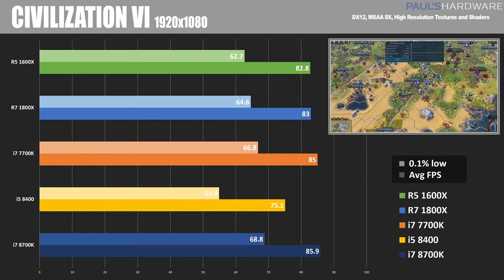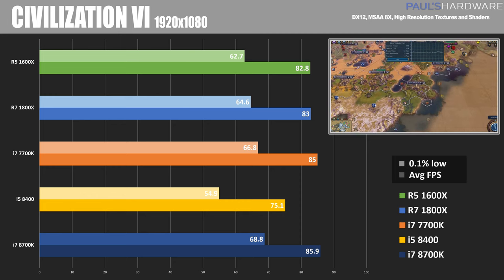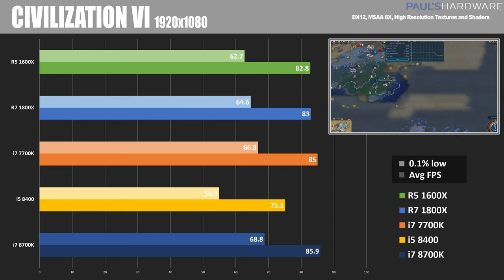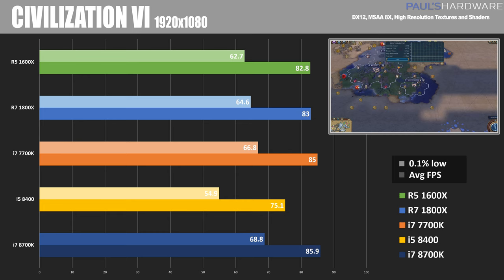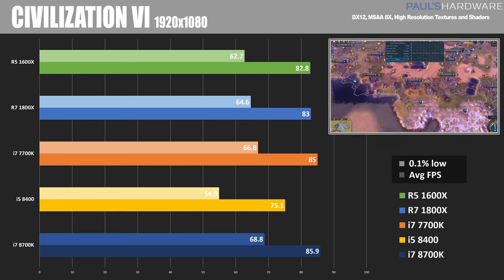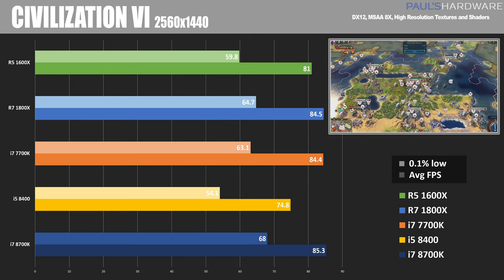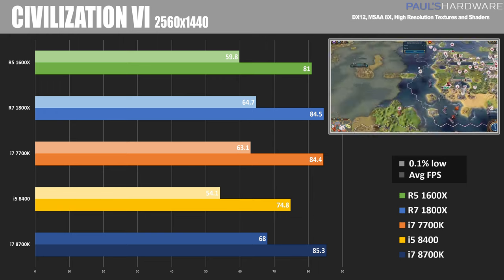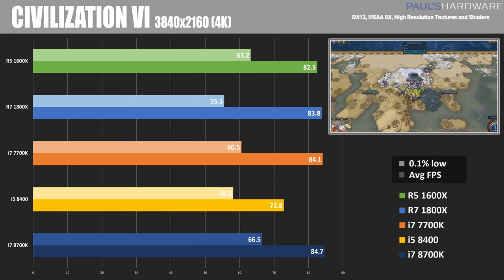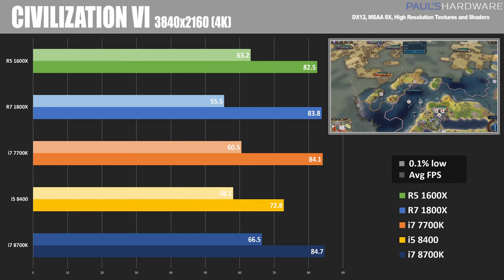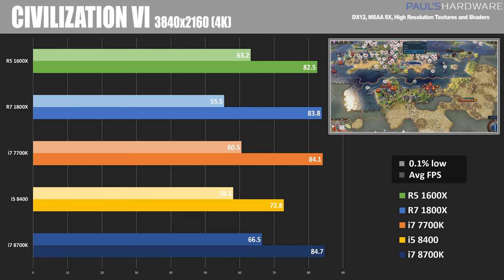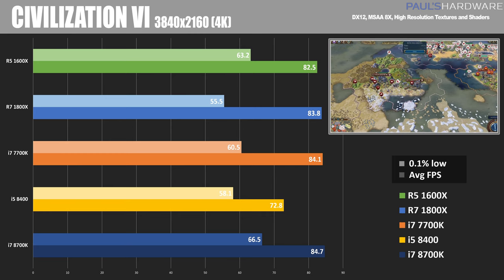One more DirectX 12 test with Civilization 6, and this is one of those weird tests where resolution doesn't seem to matter much — Civ 6 cares more about CPU clock speed. The 8700K takes the lead at 1080p with 85.9 FPS, while the 1600X and 1800X come in close behind at about 83 FPS. At 1440p the 8700K and 1800X are similar, the 1600X starts to lag a little, and the 8400 came in pretty low at just shy of 75 FPS. The one consistent finding: the 8400 with only six threads scored lower throughout, suggesting Civ 6 may be optimized for eight threads or more.